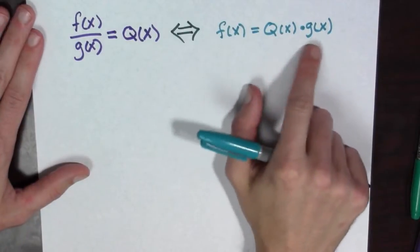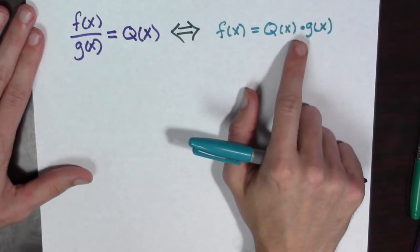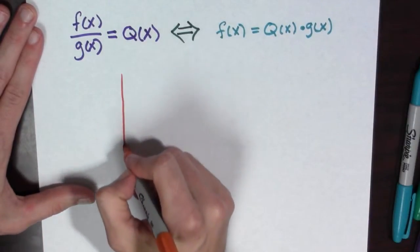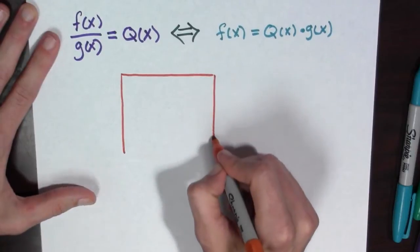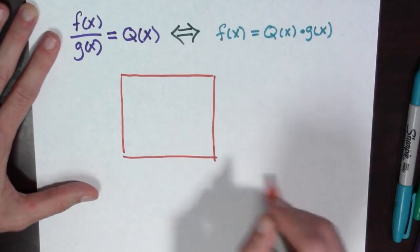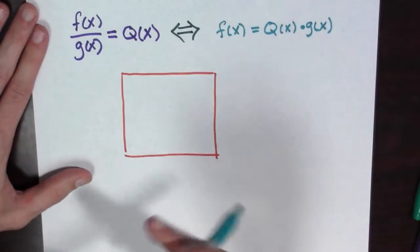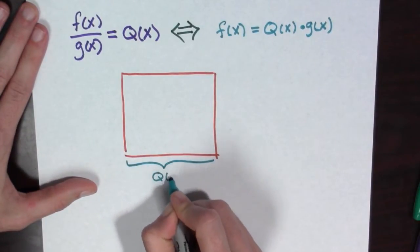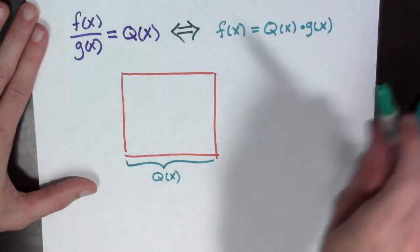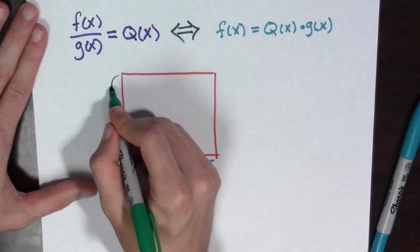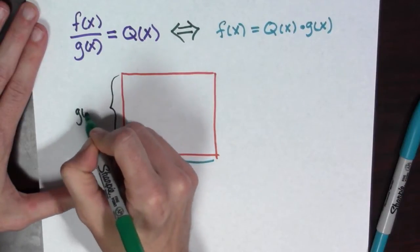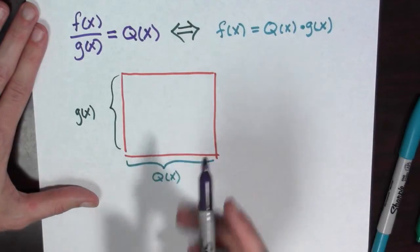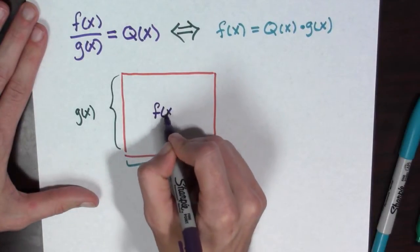Now this is pretty easy to make a picture for. What this means is I have a rectangle. This side has length q of x, while this side has length g of x. And the area of this rectangle is f of x.